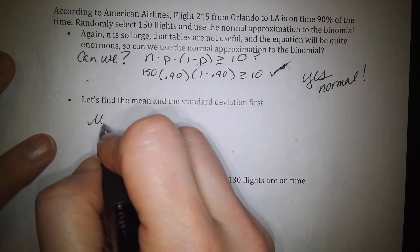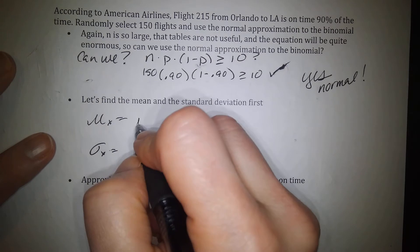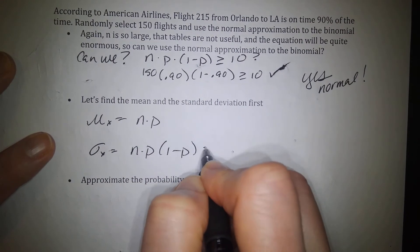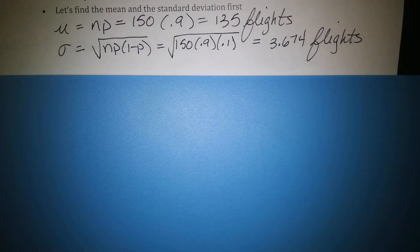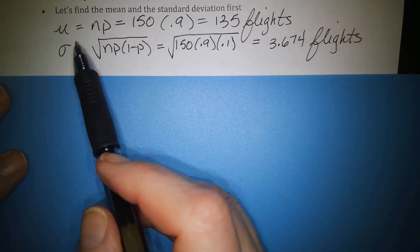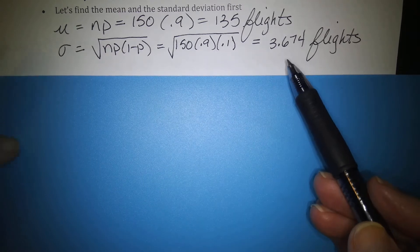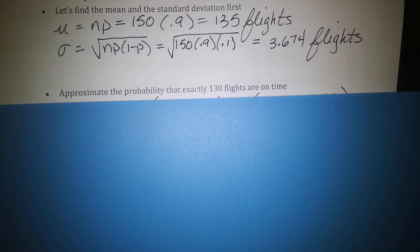Now find the mean and standard deviation. The mean is μ = n·p = 150 × 0.90 = 135 flights expected to be on time. The standard deviation is σ = √(n·p·(1−p)) = 3.674. For the next question, approximate the probability that exactly 130 flights are on time.